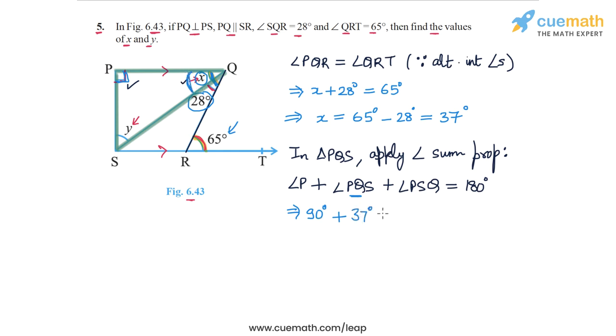So 90 plus angle PQS is this angle which is x, which we have found as 37 degrees. And angle PSQ is actually, write this as y because angle PSQ is y, and this is equal to 180 degrees.